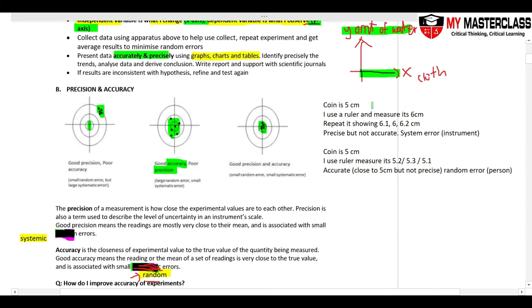Using a real life example, if I have a coin that's 5 cm, I use a ruler and measure it and it's 6 cm. Then I repeat the experiment, measure it three more times, it's 6.1 cm, 6 cm, 6.2 cm. So all these are precise because 6.1, 6.2 are very close, but they are not accurate. Not accurate means this is not close to 5 cm. As a result of this, I have system error, and this system error is due to instrument. It could be that my ruler has something wrong, and due to this instrument error, it is not precise.